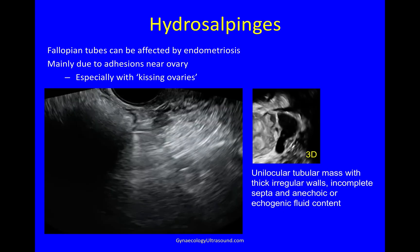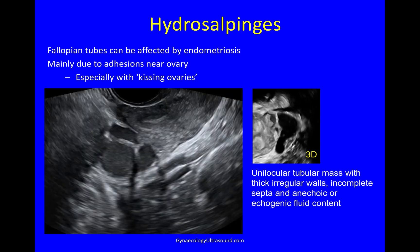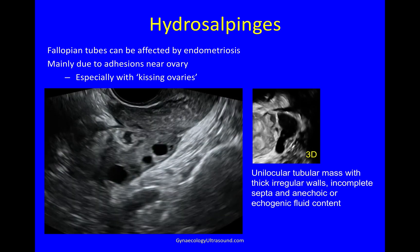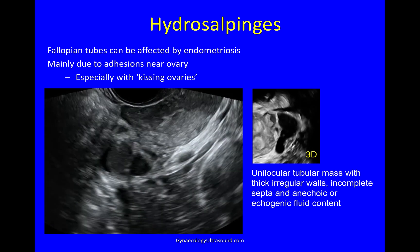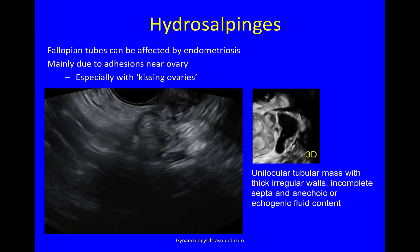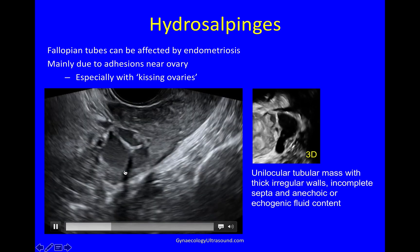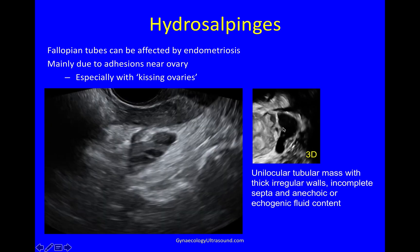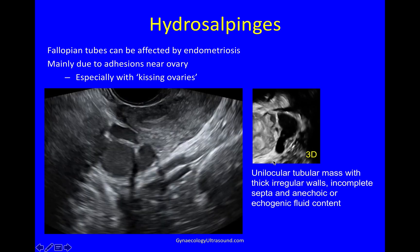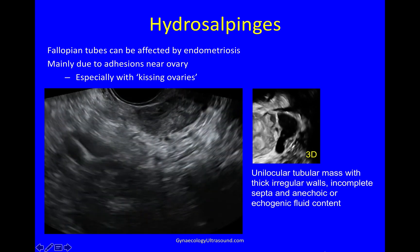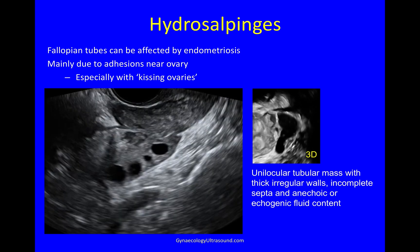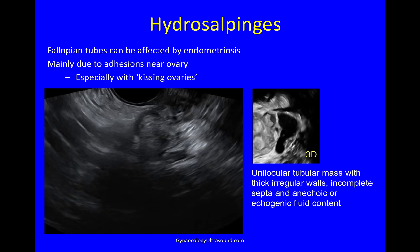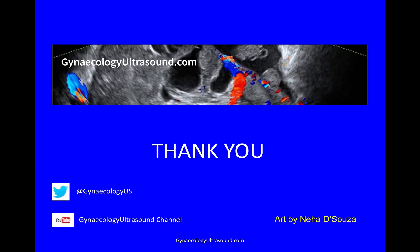The other thing you look for is hydrosalpinges, because the fallopian tubes can be affected by endometriosis, but mainly it's due to adhesions near the ovary, and you especially see this when you have kissing ovaries. In this longitudinal view, you can see a uterus, then the ovary, and here is the hydrosalpinges. If you do 3D of that area, it shows you very clearly that this is a definite hydrosalpinges — a unilocular tubular mass with thick irregular walls, incomplete septae, an anechoic or echogenic fluid content, and you may have shadowing.